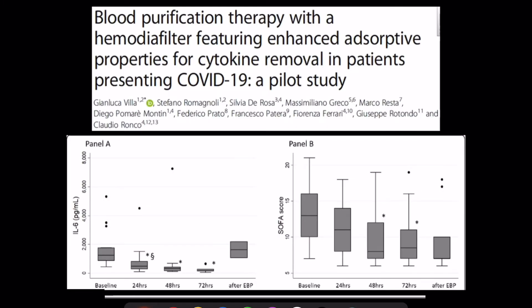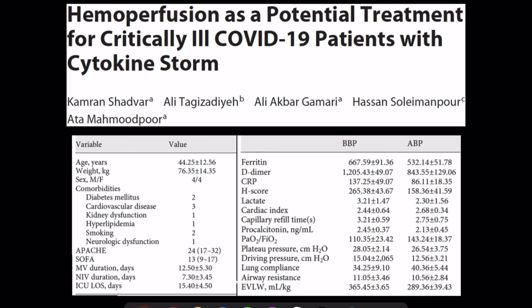There are also pilot studies and case series — for example, blood purification therapy with hemofiltration with enhanced absorptive properties found that after absorptive CRRT there was a reduction in IL-6 levels and SOFA scores, showing overall benefit of these therapies.